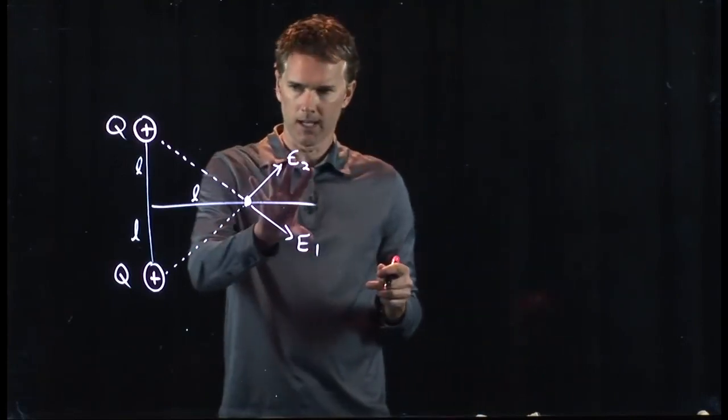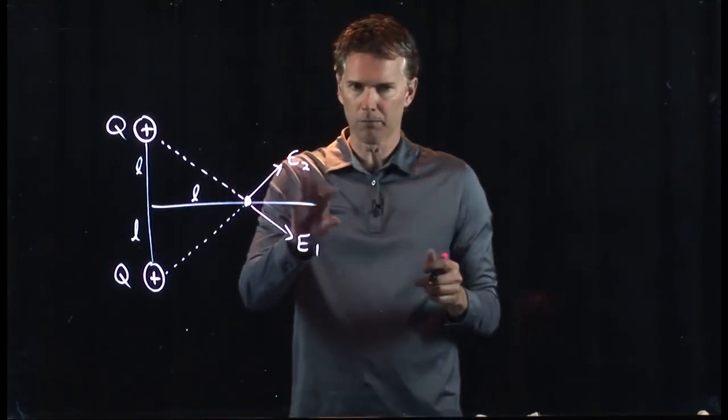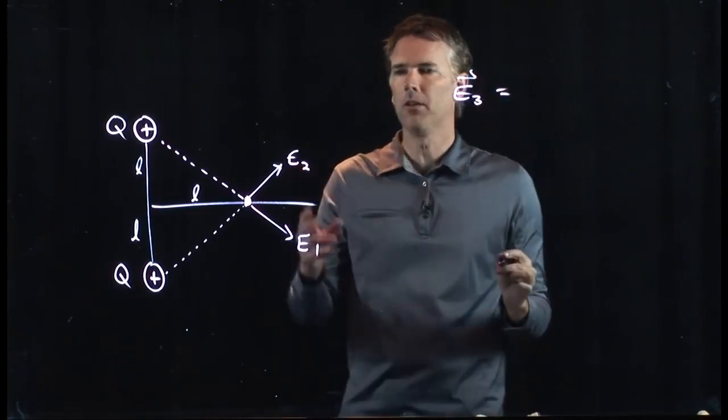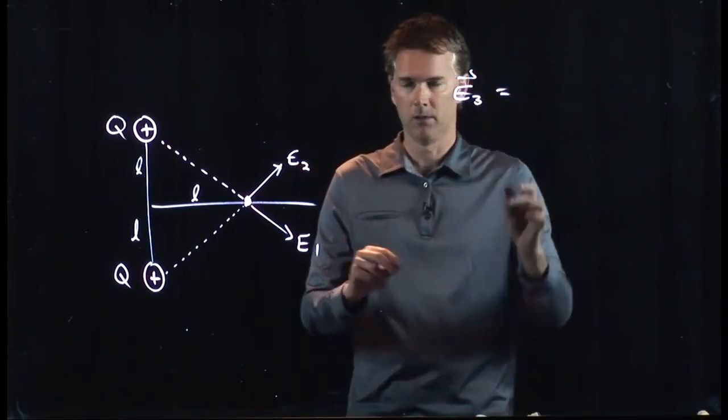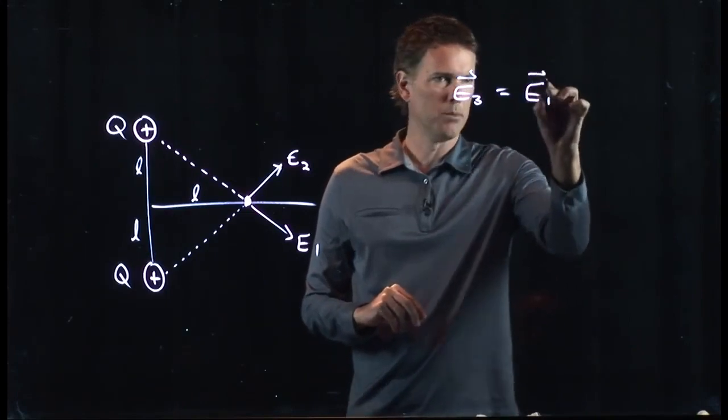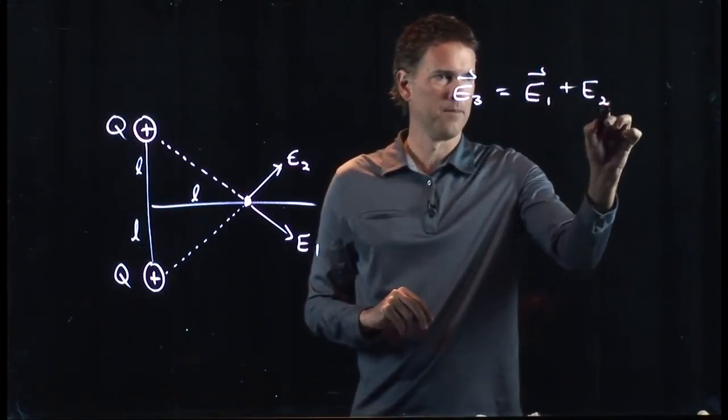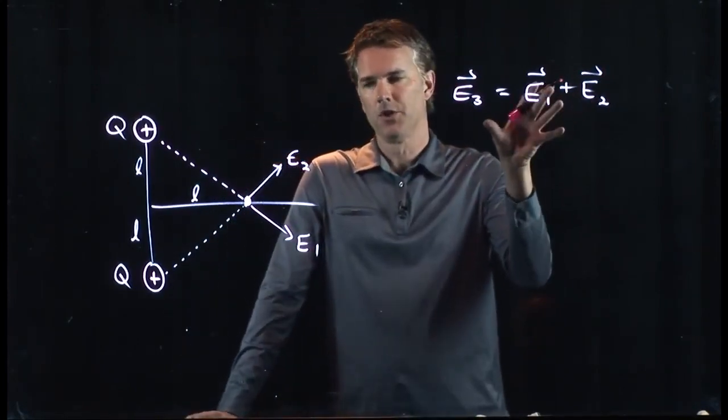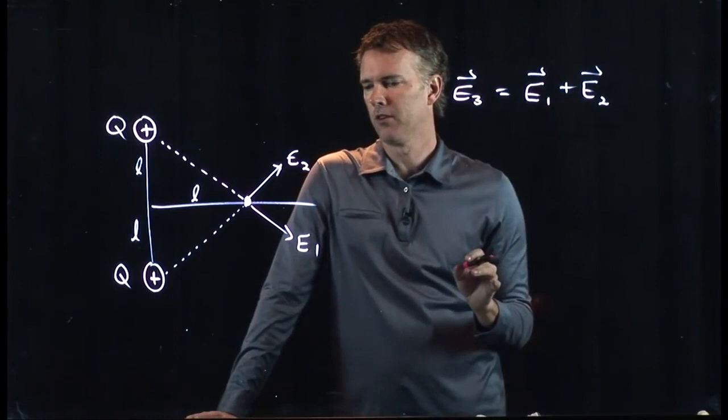And if we want to calculate the net field at this point, how do we do it? E3 is just going to be the sum of those two, but they're vectors. Right? We have to remember to put the little arrows on top.